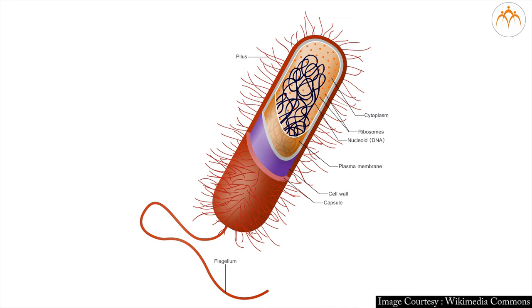Prokaryotic cells are much smaller in size as compared to eukaryotic cells. Commonly, their cell size is in the range of 1 to 10 micrometers.